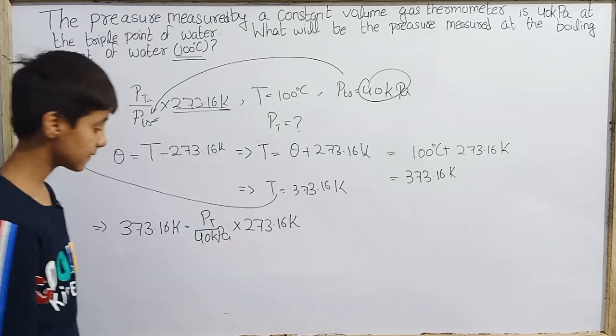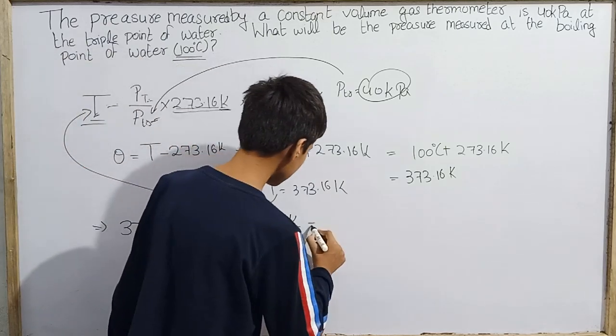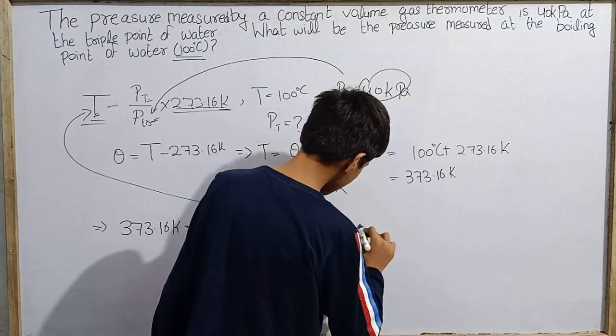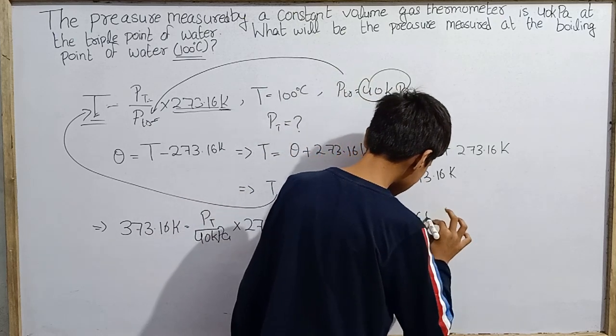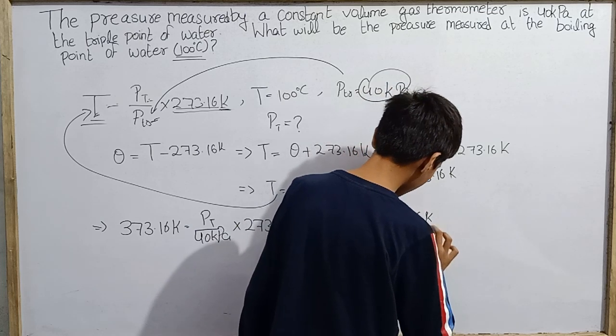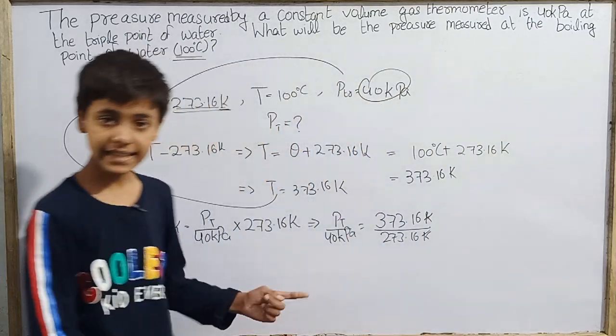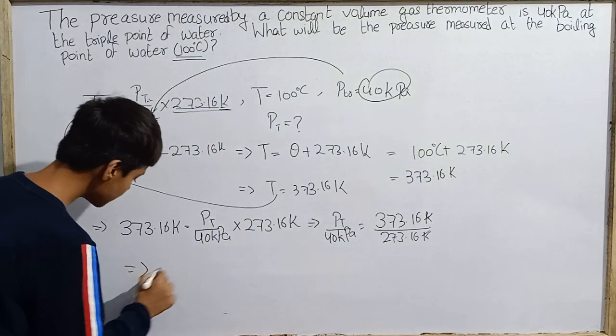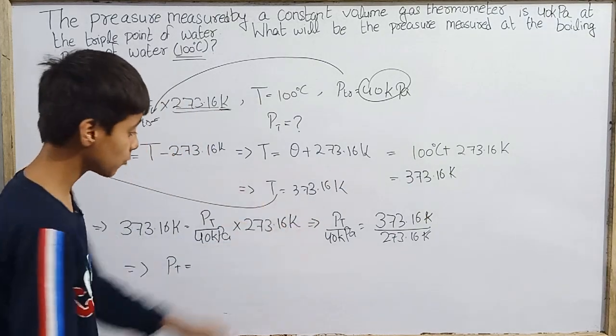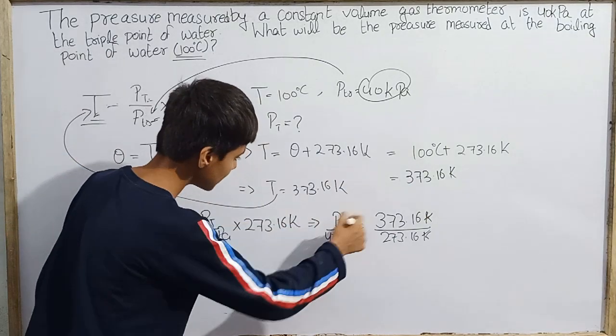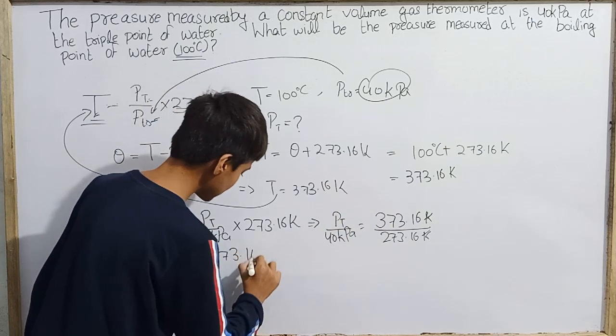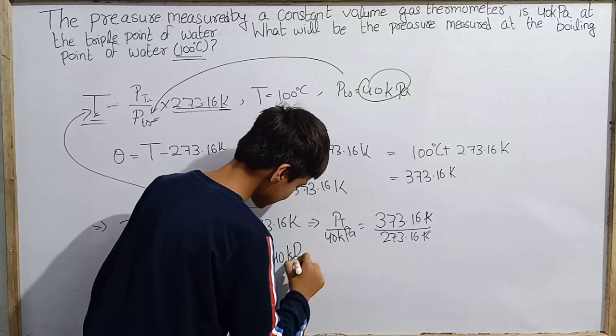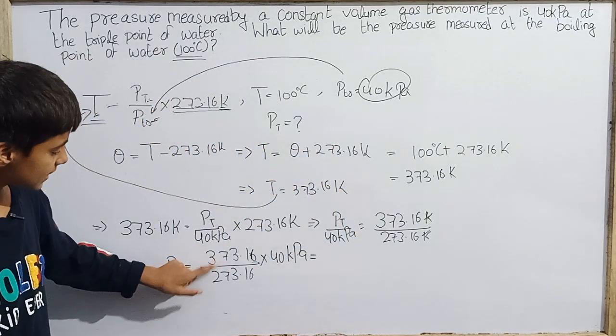What do you do? Both sides of the equation, divide by 273.16 Kelvin. So here you will get P at T over 40 kilopascals. Then you will get this in here. And now multiply both sides by 40 kilopascals and 40 kilopascals. Then you will get the same value because these are the same value. And you will get 373.16 over 273.16 into 40 kilopascals.